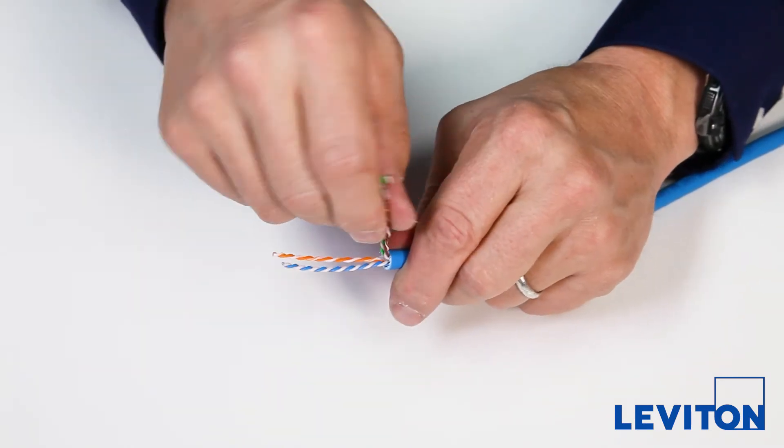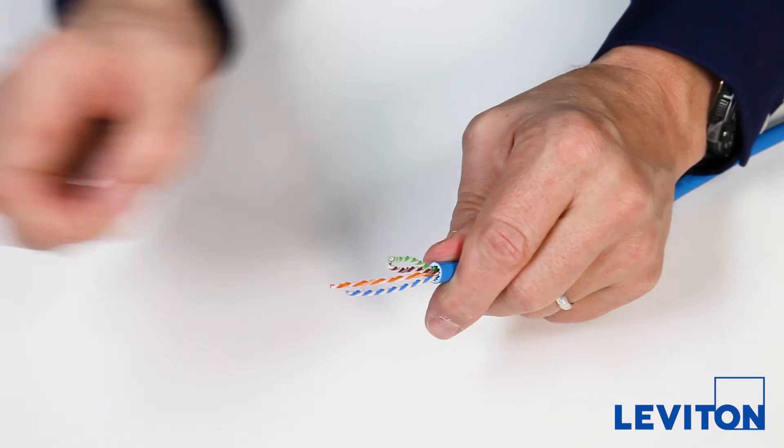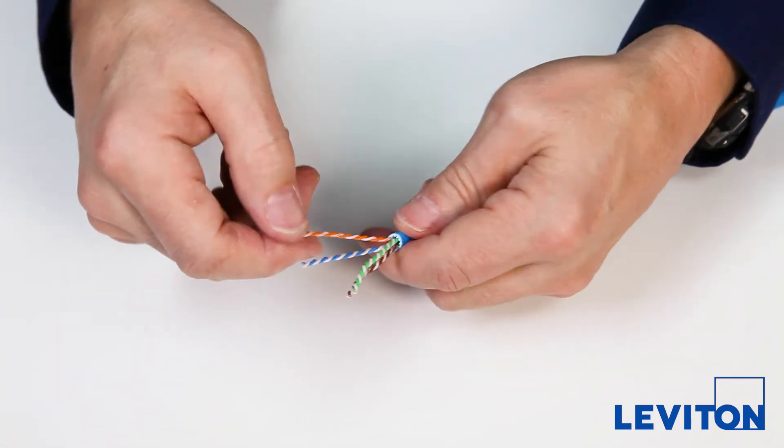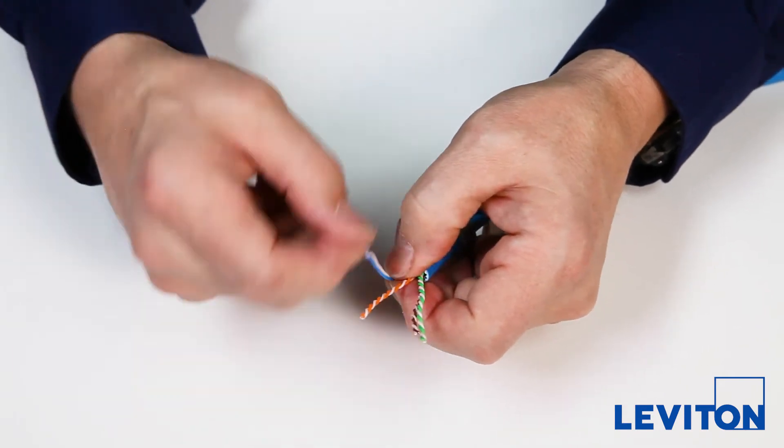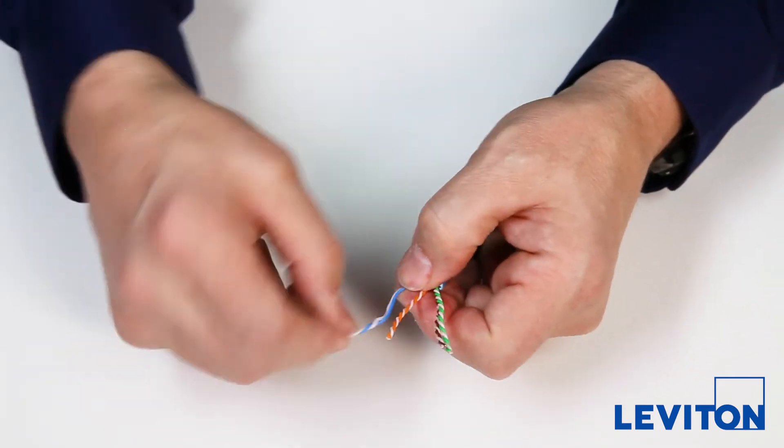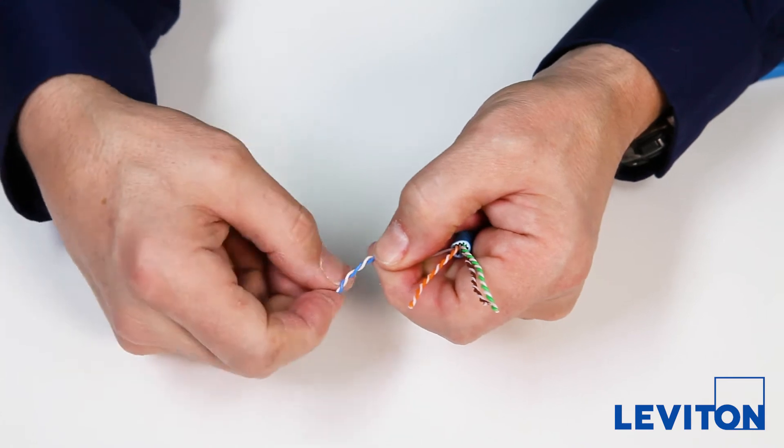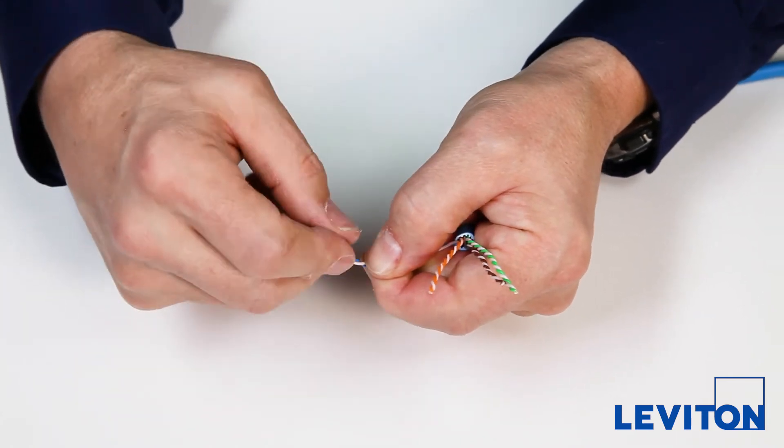Inspect the wire pairs to make sure you didn't damage the insulation or conductor during cable preparation. To straighten out the wires, grasp each pair near its base and untwist it. As you untwist the pair, slide your fingers along both wires to smooth out any kinks.